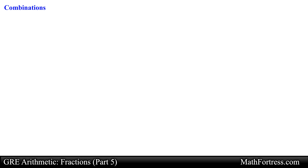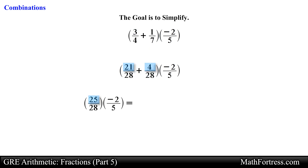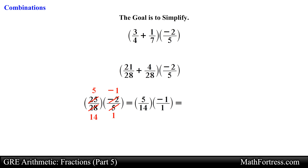The final types of problems you need to be careful with require you to perform a combination of operations. The important thing to remember is that the goal of all these steps is to simplify the fractions. Let's simplify the following expression: (3/4 + 1/7) times negative 2/5. We first add 3/4 and 1/7 by rewriting both with a common denominator, then add the numerators. Before multiplying, we can reduce 25 with the denominator 5, and reduce 28 with the numerator 2. Multiplying across gives the final answer: negative 5 over 14.